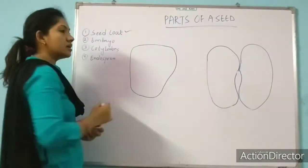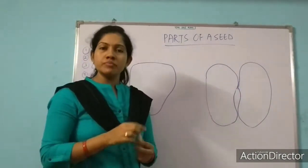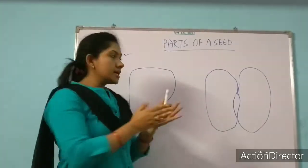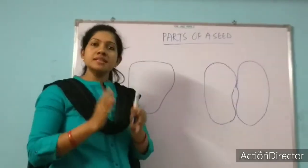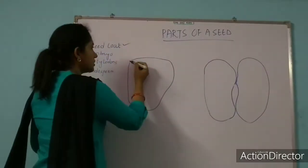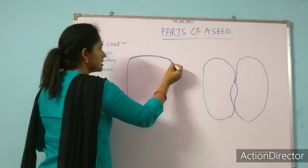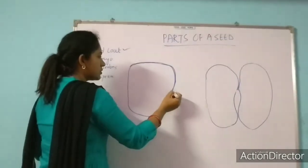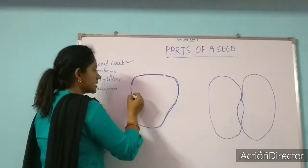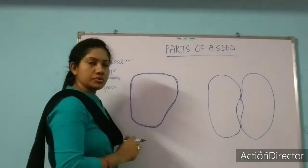First I am telling you about seed coat. As we discussed fruit coat — it is a covering that covers a fruit — similarly, seed coat is a covering that covers the seed. It protects the seed from the external environment. We call it seed coat.